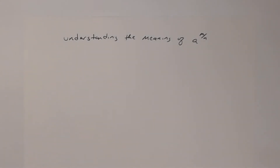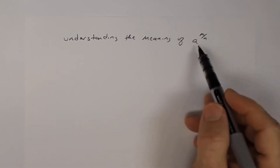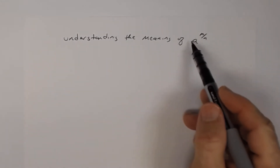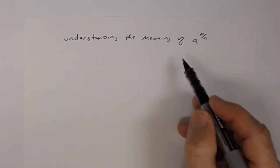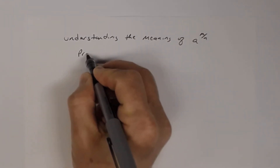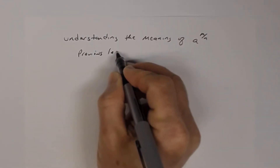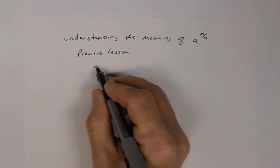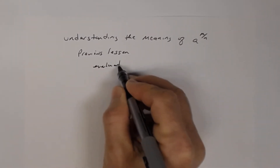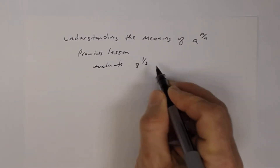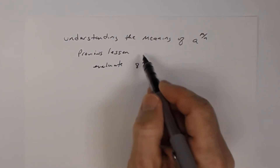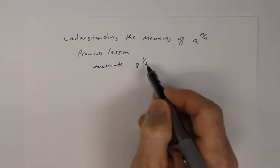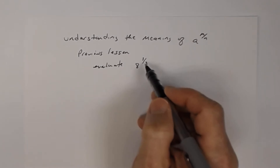In this lesson, we're going to look at what it means when we have an expression where we have a base raised to a rational exponent m divided by n. In the previous lesson, we saw how to evaluate something like 8 to the 1/3. Notice it's almost the same idea, except the numerator was 1, and the denominator was an integer greater than or equal to 2.